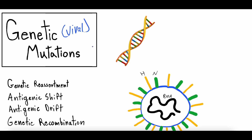We're also seeing it a lot in news articles, so we thought we would take a minute to dive into genetic and viral mutations — how viruses mutate, the different ways in which they can mutate, and then which ones are highest risk. I think this will be applicable to a lot of the current events we're seeing now as well as in the future.